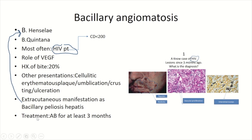The mainstay of treatment of bacillary angiomatosis is antibiotics for at least three months. The first-line agents are doxycycline or erythromycin. However, long-term therapy may be needed in immunosuppressed patients.